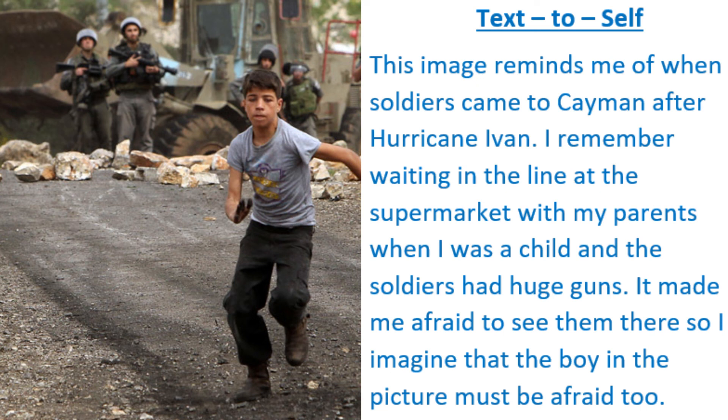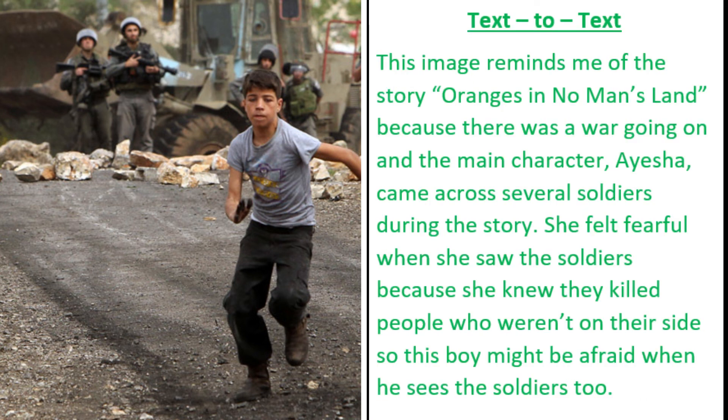For my text-to-text connection, you'll likely recognize the text I'm connecting to. This image reminds me of the story Oranges and No Man's Land because there was a war going on and the main character Aisha came across several soldiers during the story. She felt fearful when she saw the soldiers because she knew they killed people who weren't on their side, so this boy might be afraid when he sees the soldiers too. Again, I use my connection to help me understand how the boy in the picture is feeling — a lot like how I could use a connection to understand how a character in a book is feeling.